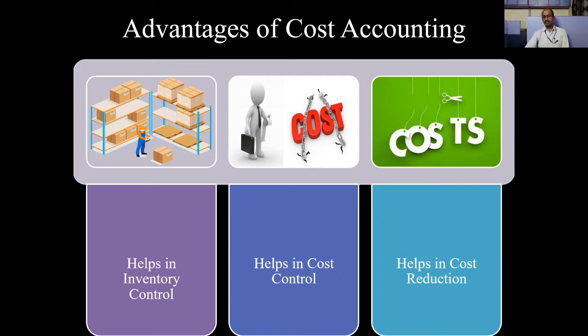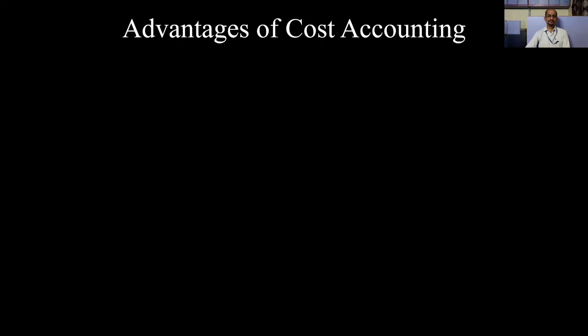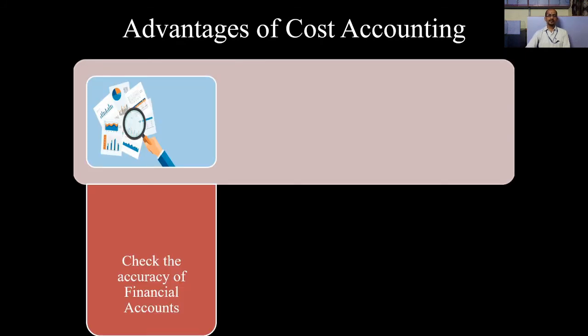This way you can have various ways to reduce the cost. Next, it checks the accuracy of financial accounts. We have already seen the limitations of financial accounts, and in that we have seen one limitation: manipulation of financial accounts is possible. So there is a counter check by cost accounting where we can check the accuracy of financial accounts at the end of the period.